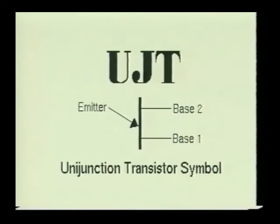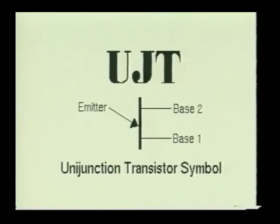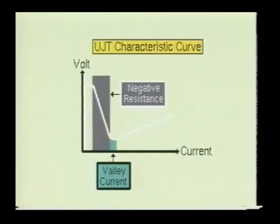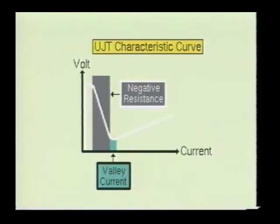Here we see the unijunction transistor, often referred to simply as a UJT. Even though the UJT is a three-terminal device, its operation is quite different from that of the BJT or FET transistors. It works like a voltage-controlled switch and does not amplify. The three leads on the unijunction transistor are called base-1, base-2, and the emitter. The emitter section has a resistance which rapidly decreases when the input voltage reaches a certain magnitude. This is referred to as a negative resistance characteristic, which makes the UJT useful in timing and oscillator circuits.